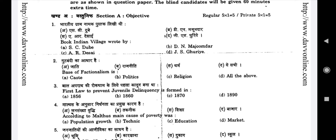Third question, Section A: The first law to prevent juvenile delinquency was formed in — Option A: 1856, Option B: 1860, Option C: 1870, Option D: 1890.